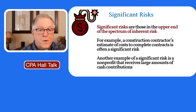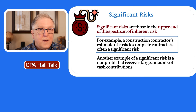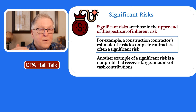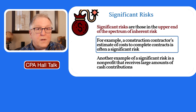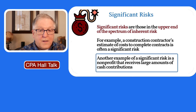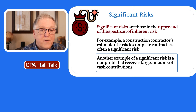For example, a construction contractor has the estimate of cost to complete contracts. That estimate is complicated and subjective, so inherent risk here is very high — a 9 or 10 on a scale of 10 — making it a significant risk. Another example is a non-profit with lots of cash coming in. Because that money is easily stolen, you probably have a significant risk there as well.